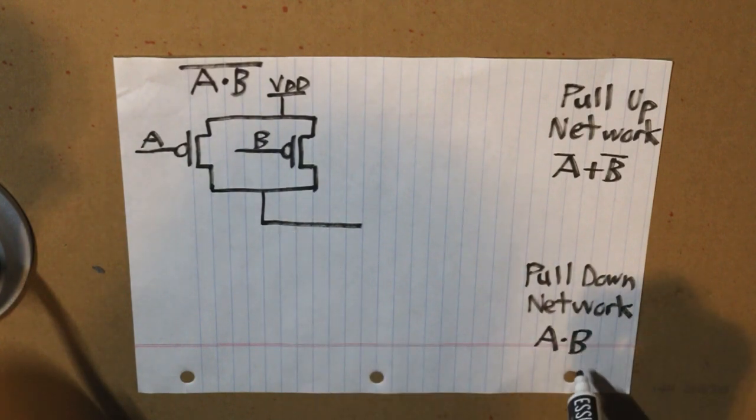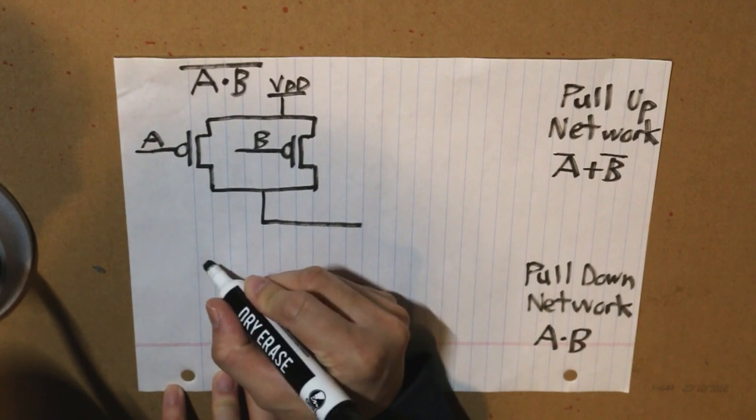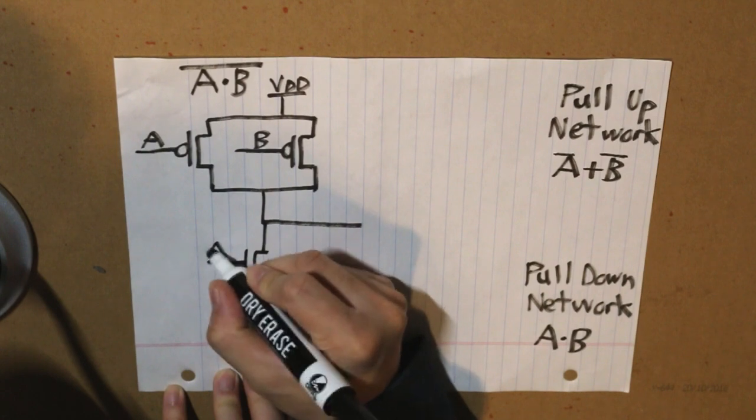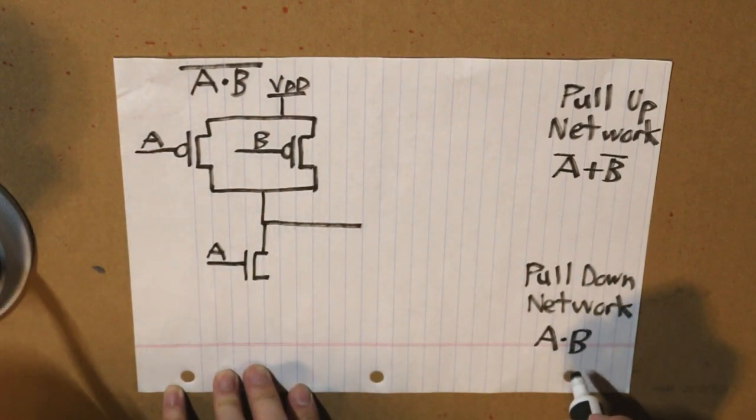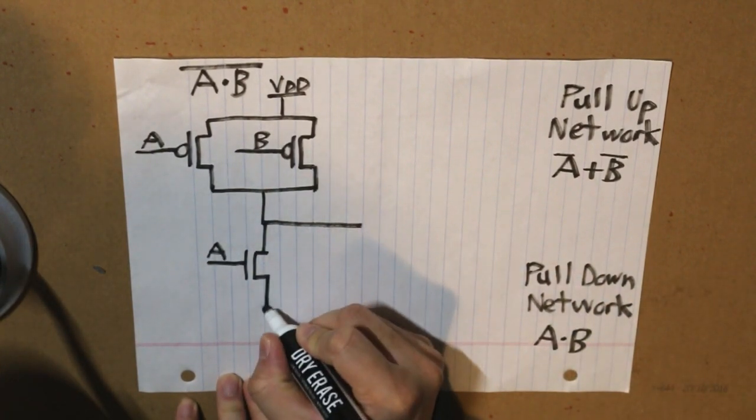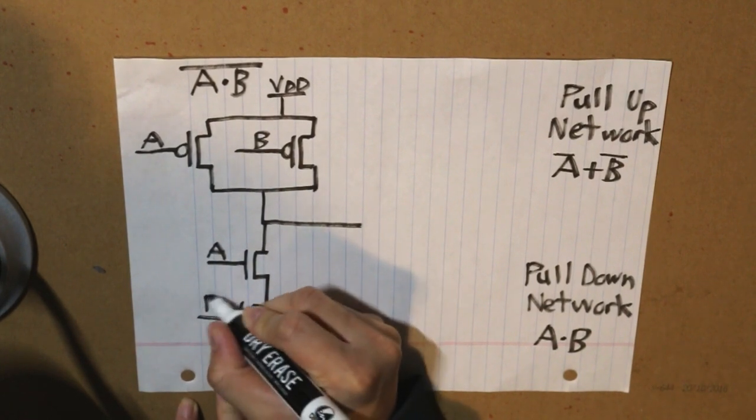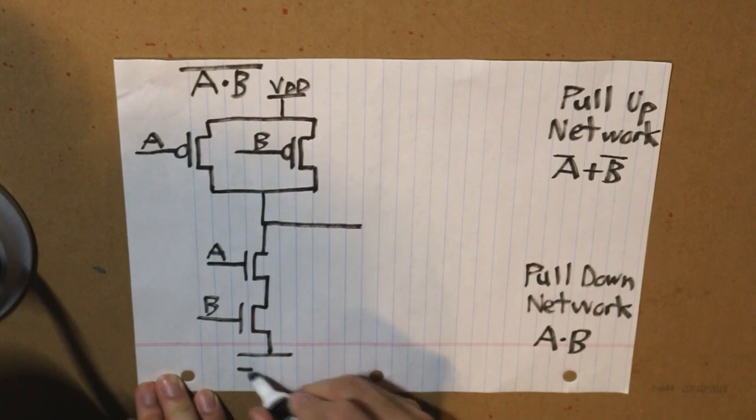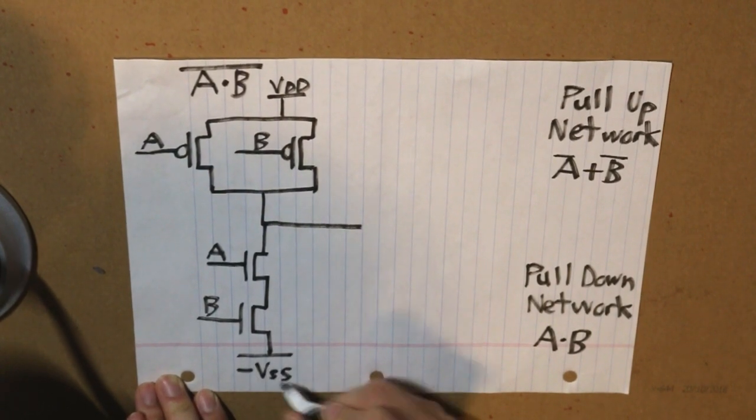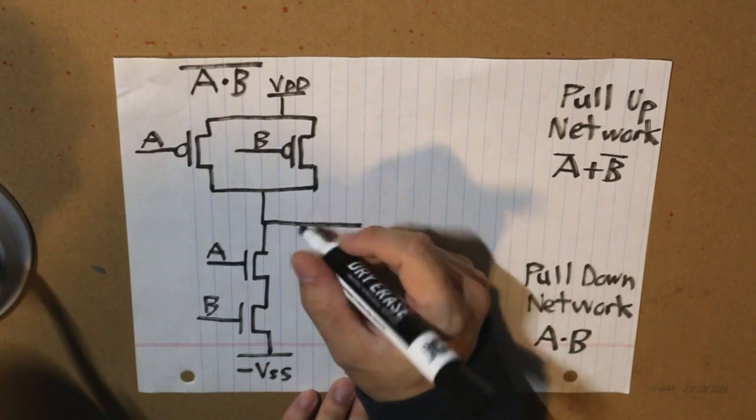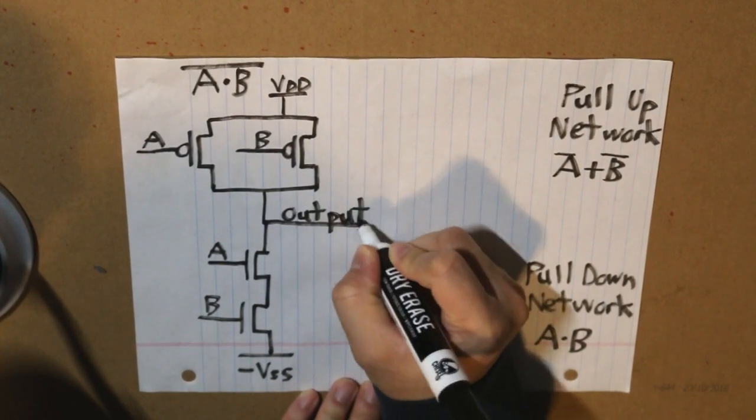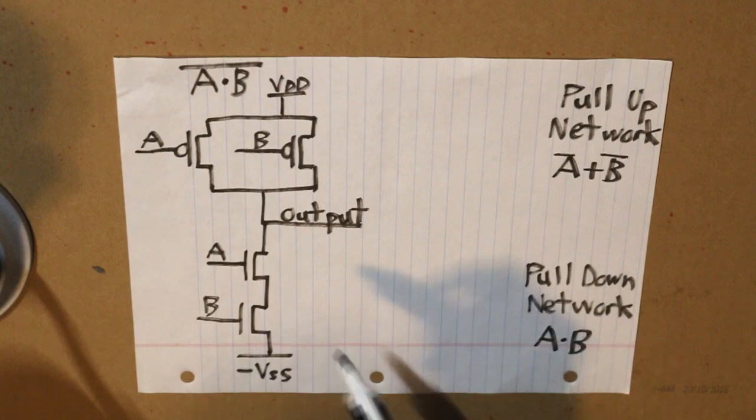For our pull-down network for our NAND gate, we have A and then B, and here is our output. So negative VSS, and then finally we have our output. This is our NAND gate, this is how it looks like.